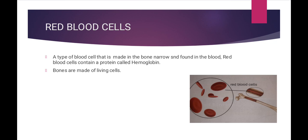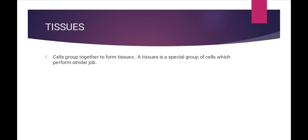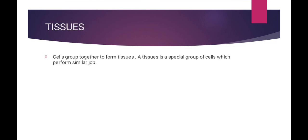Bones are made of living cells – bones ke andar bhi jaandar cells paaye jaate hain. The third type is epithelial cells. Epithelial cells are a type of cell that lines the surface of your body. Hamaari skin ki satha pe jo cells paaye jaate hain, woh epithelial cells kehlaate hain. They are found on your skin, blood vessels, urinary tract, and organs such as the heart, liver, and the digestive system.